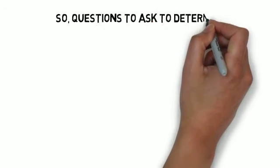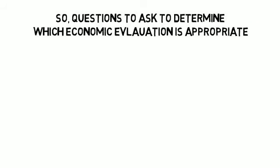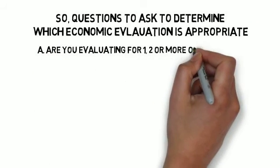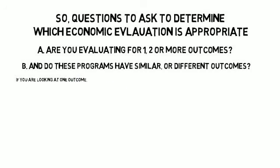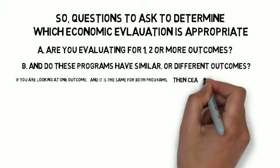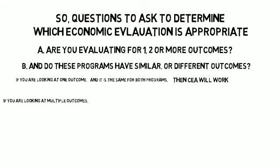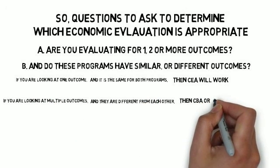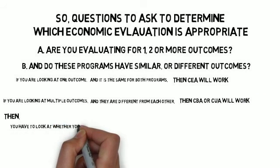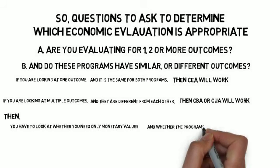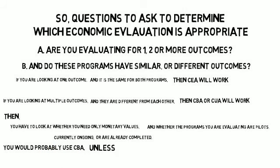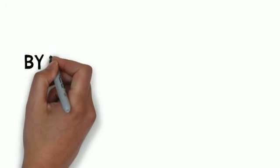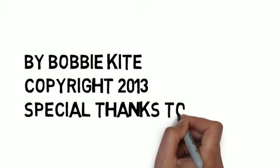Questions to ask yourself to determine which economic evaluation is appropriate: A — are you evaluating for one, two, or more outcomes? B — do these programs have similar or different outcomes? If you're looking at one outcome and it is the same for both programs, then a CEA will work. If you're looking at multiple outcomes and they are different from each other, then CBA or CUA will work. Then you have to look at whether you need only monetary values, and whether the programs you are evaluating are pilots, currently ongoing, or already completed. You would probably use CBA, unless the programs have already been completed and you needed to look at more than just monetary values. This, in a nutshell, is a breakdown of the major economic evaluations.